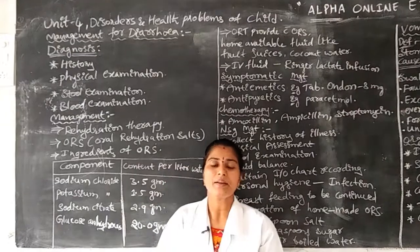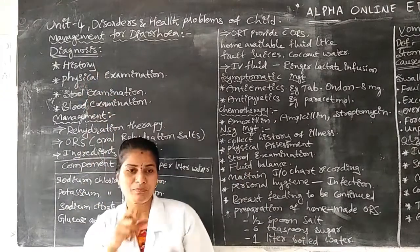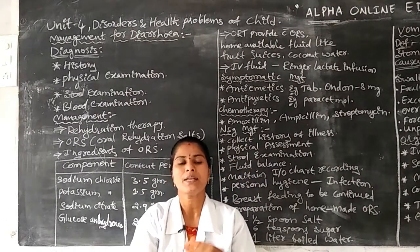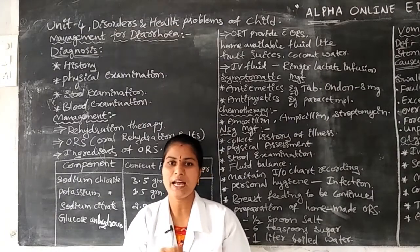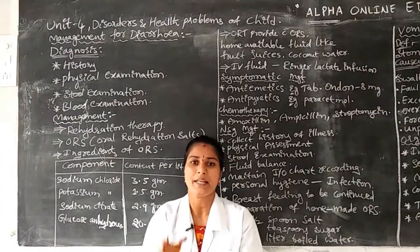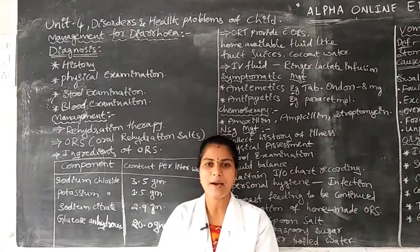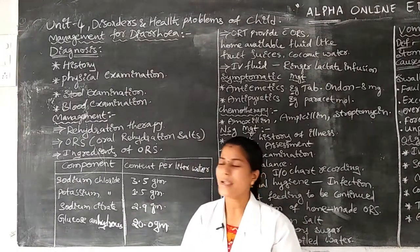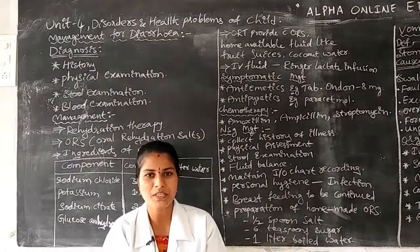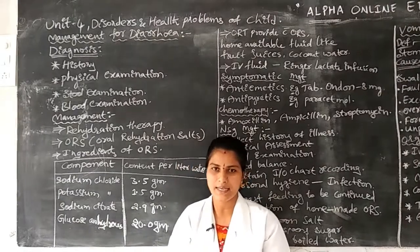Why? Because the infant is in the 1 to 12 months age group. Subjective data means the infant themselves gives some complaints to the nurse. Objective data means we collect history regarding the client from family members, the mother, or friends and relatives. If the infant cannot give exact information, we go for secondary data.